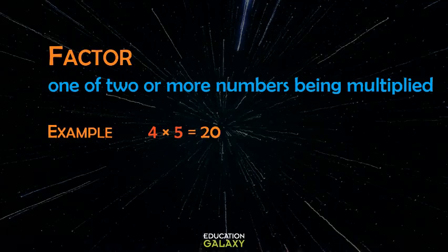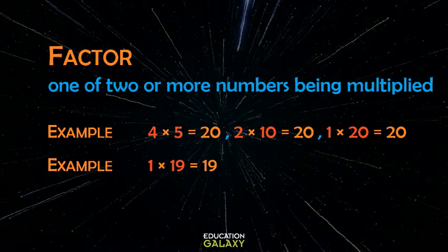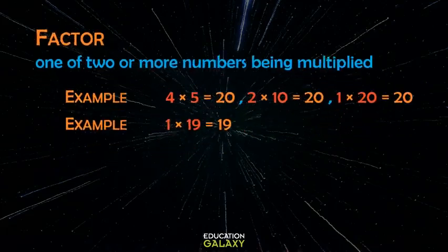Of course, the product 20 has other factors, like 2 and 10, and 1 and 20. But then there are some numbers out there that only have 1 and themselves as their factors, like 19. So those are going to have a special name, and that special name is prime.